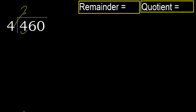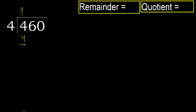4 multiplied by 2 is 8 — 8 is greater. Multiply by 1 is 4 — is not greater, ok. Subtract. Next.